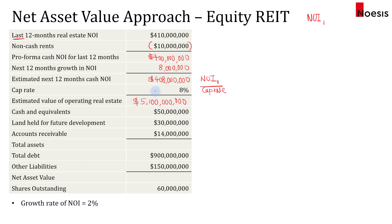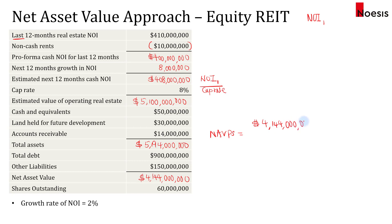We then compute total assets by taking the value of the operating real estate plus cash and equivalents, plus land held for future development, plus accounts receivable, giving us $5.194 billion. Note that intangible assets are excluded. We subtract total debt and other liabilities from total assets, giving us $4.144 billion as the net asset value. Dividing by 60 million shares outstanding, the net asset value per share is $69.07. We then compare this with the REIT's share price to assess potential undervaluation or overvaluation.